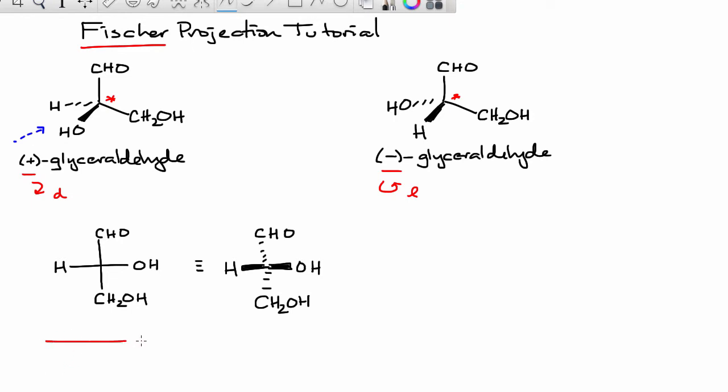What I've underlined in red here is the Fischer projection. This is what the Fischer projection means here. The bonds on the horizontal line are projected out towards you. The bonds on the vertical line are projected behind the plane of the board.